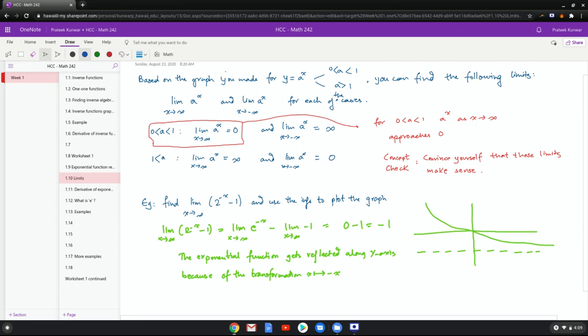Limit x goes to infinity of two to the negative x minus one becomes, you can distribute the limit, and then two to the negative x becomes zero, zero minus one becomes negative one. Now the exponential function gets reflected along the y-axis because of the transformation x to negative x. And then this line represents y equals negative one. Because what this is saying is no matter how big you make x, this whole function can never be less than negative one.